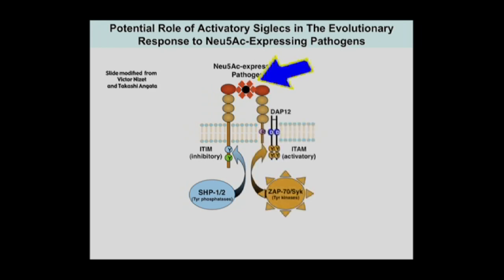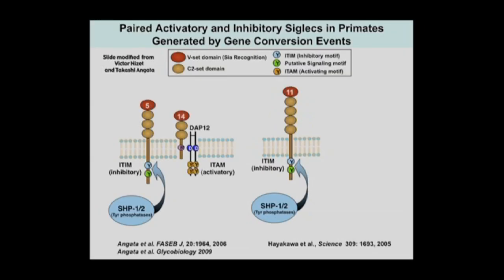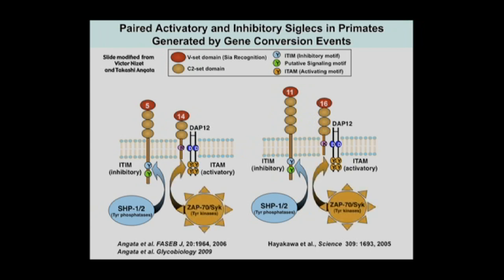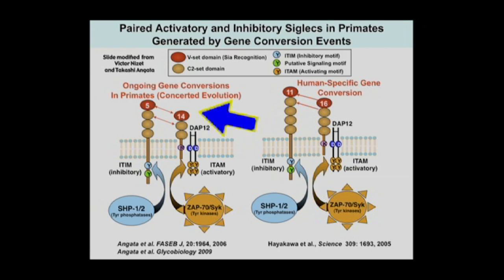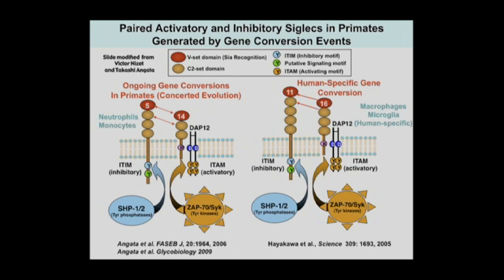It turns out that some siglecs we more recently discovered do the opposite — they see the same thing but give the opposite response. So if pathogens fool us one way, we can fight back with an activatory siglec. It turns out there are two cases we found: siglec 5 and 14, and siglec 11 and 16, where the business end of these molecules that recognizes sialic acid is kept the same by a process called gene conversion — concerted evolution — where sequences are constantly pasting themselves on top of each other. The front end stays the same and the back end is completely different.